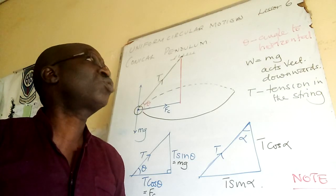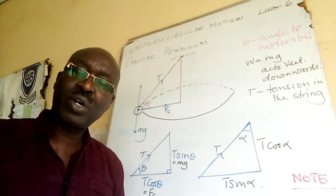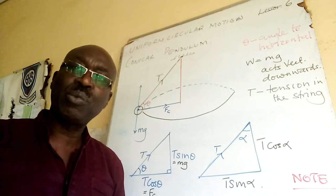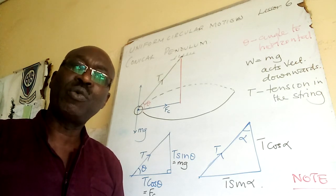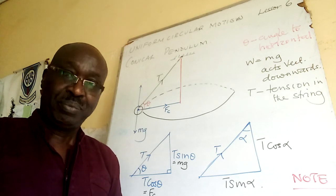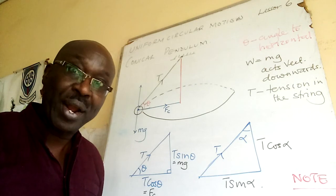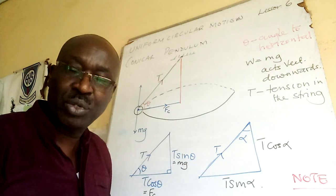Welcome boys and girls to our lesson 6, a continuation of lesson 5. The topic is uniform circular motion, form 4. Now I can start telling you it is paper 1, motion sine paper 1, linear motion, circular motion, paper 1.